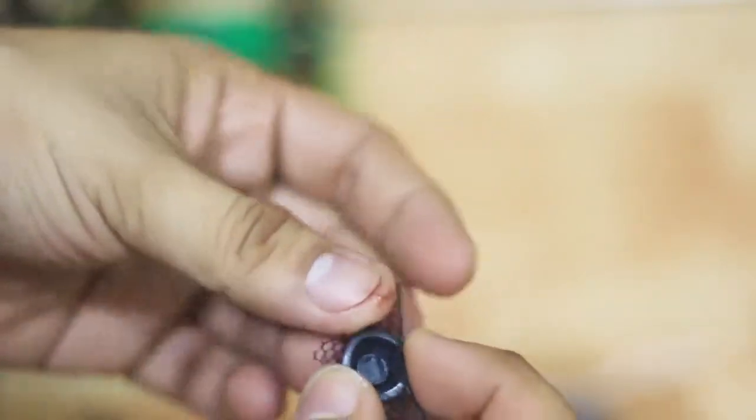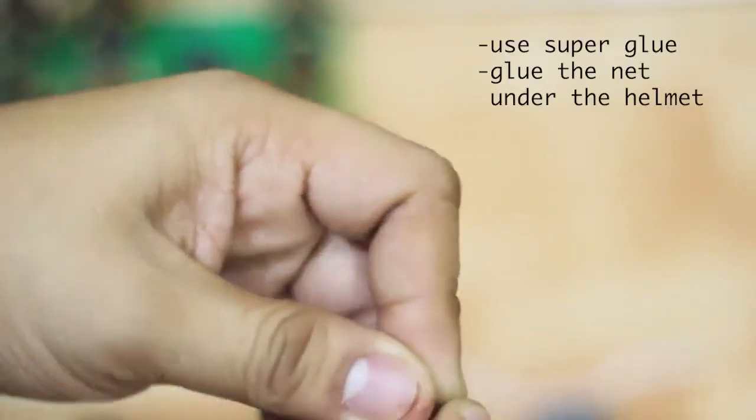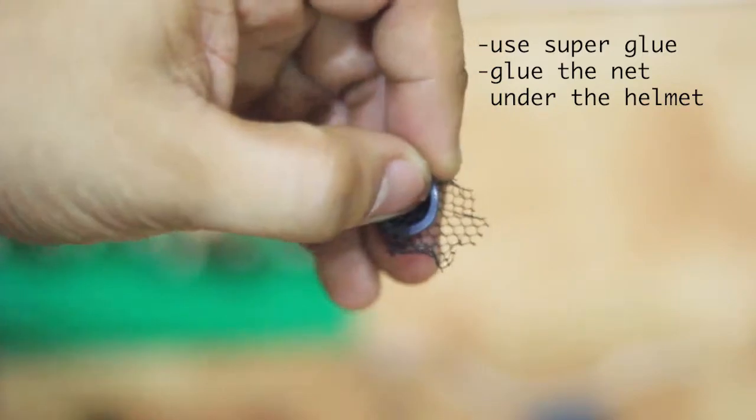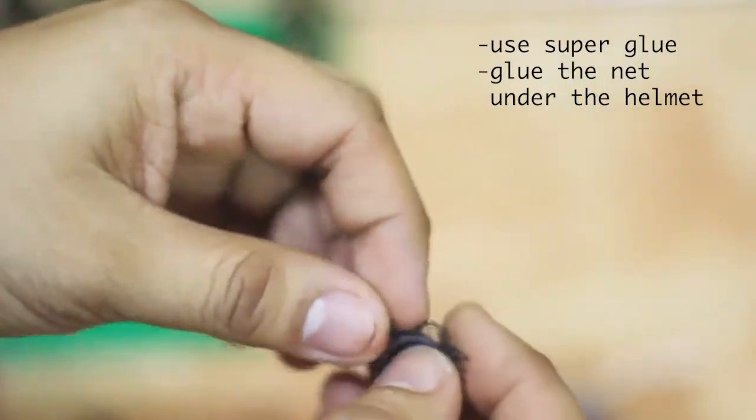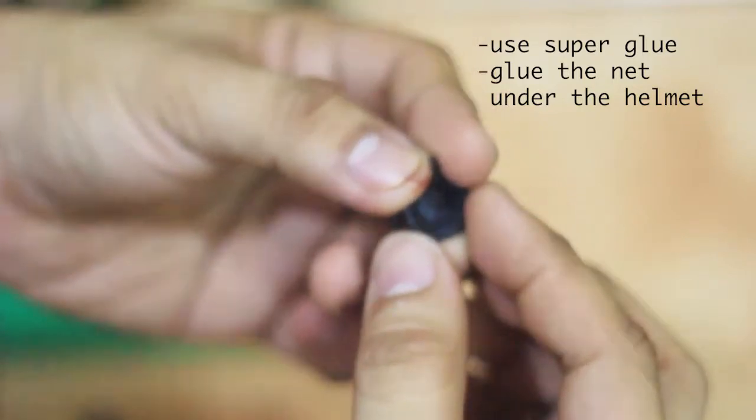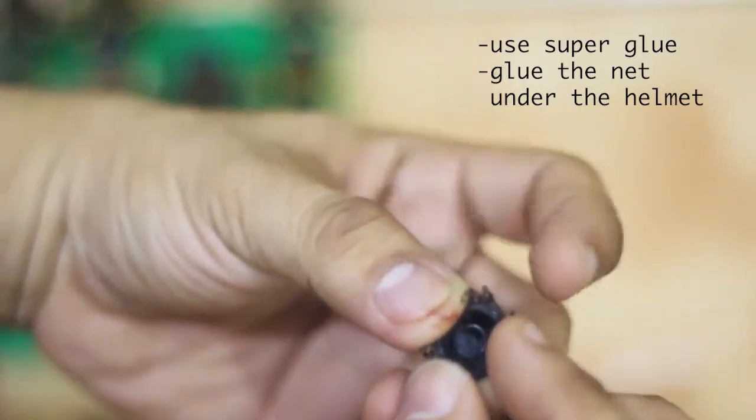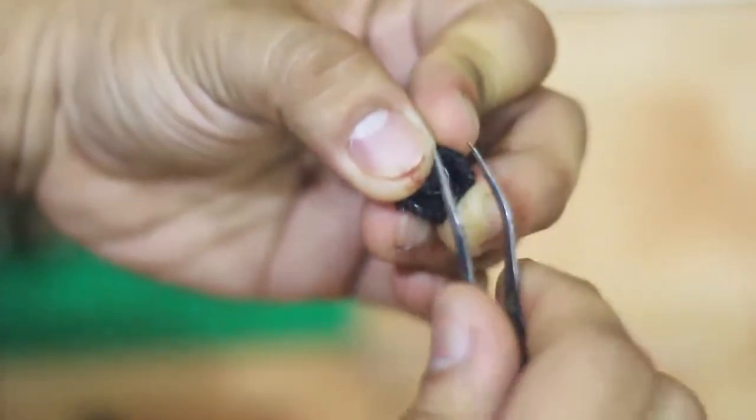And then you need a glue, this one, this is Mighty Bond. So you just put it like this. There, and then push forward. Make sure that it is covered, so like that, see, see.